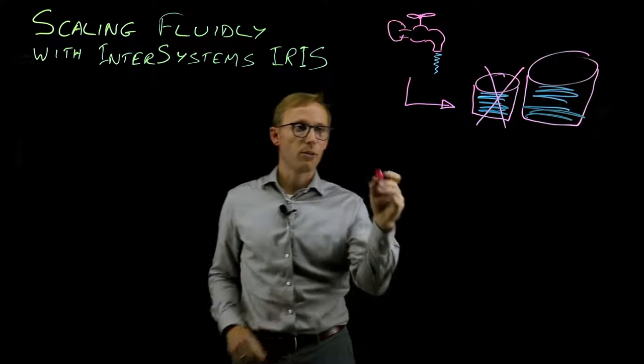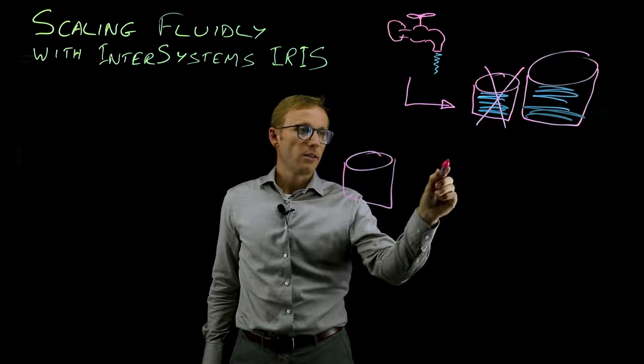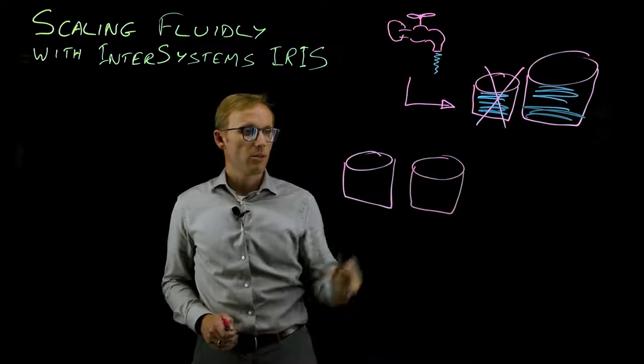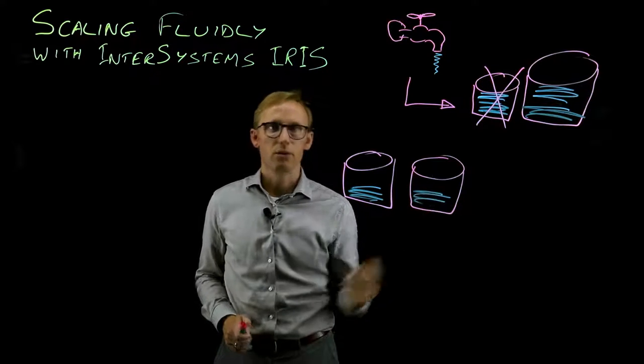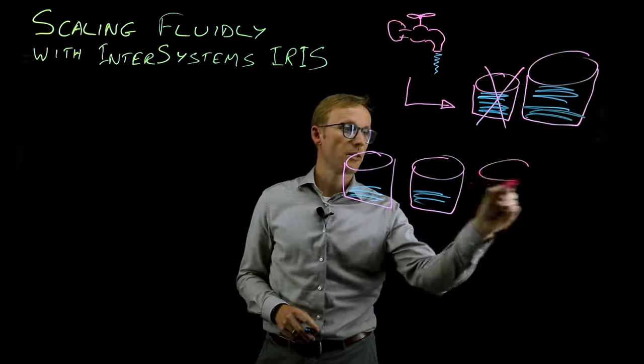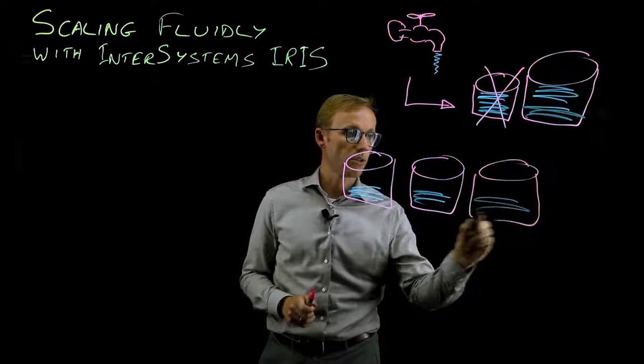An alternative way of working would be to start from your first server and then just deploy a second server next to it and distribute the data across the two servers. And when these guys start filling up you just add another one and you rebalance the data across these servers.